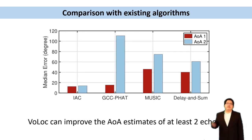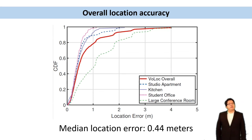Comparing with the existing AOA results like GCC-PHAT and MUSIC, Volock can improve the AOA estimate of at least two echoes, and the improvement on the second AOA is substantial. Our system also reports the median localization error of 44 cm in different environments, like studio, kitchen, office, etc.